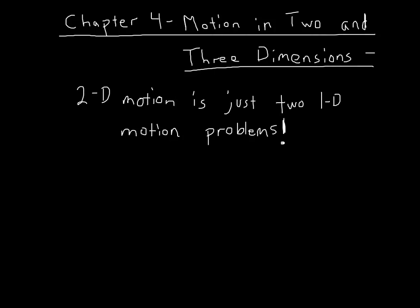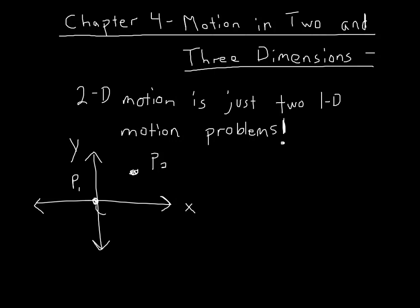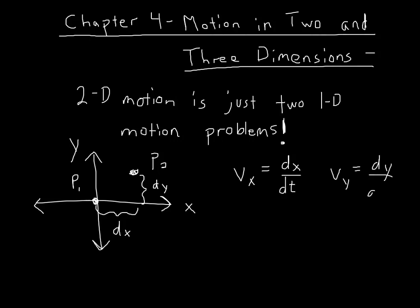The book gets a little more confusing than it needs to when discussing two points on a coordinate system with an x-axis and y-axis. To get between point P1 and point P2, you do displacements dx and dy. The velocity in the x-direction equals dx divided by change in time, and the velocity in the y-direction equals dy divided by the change in time.